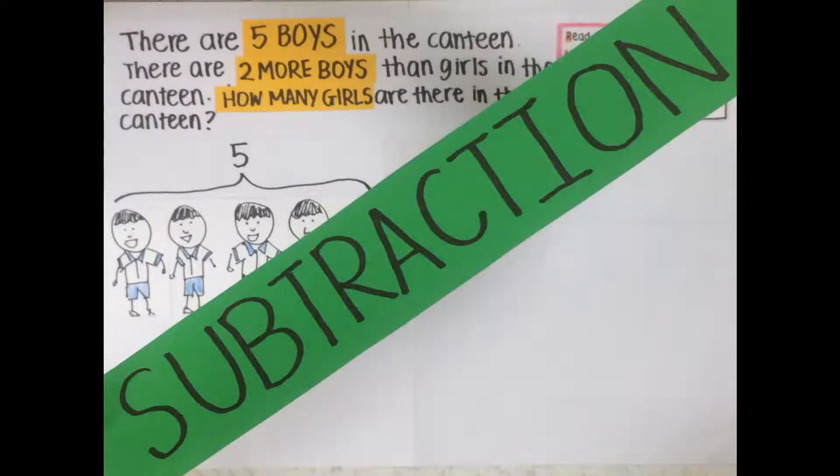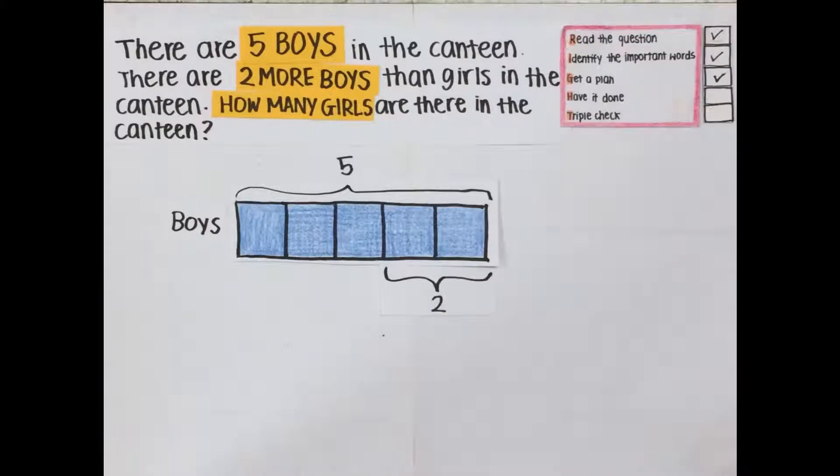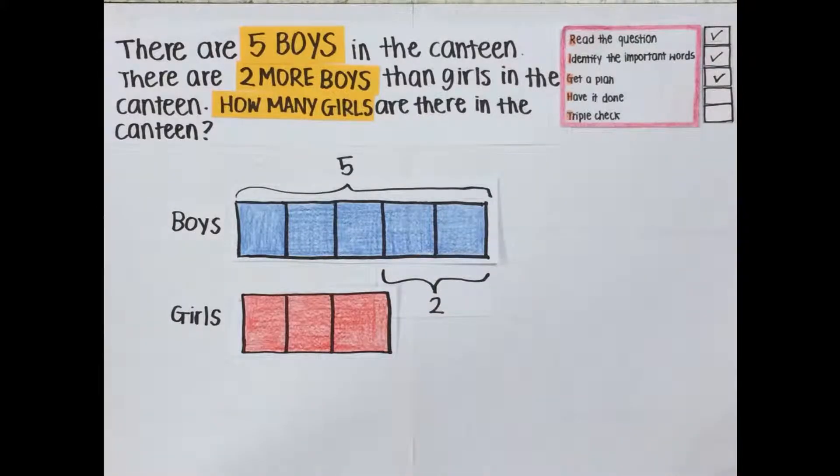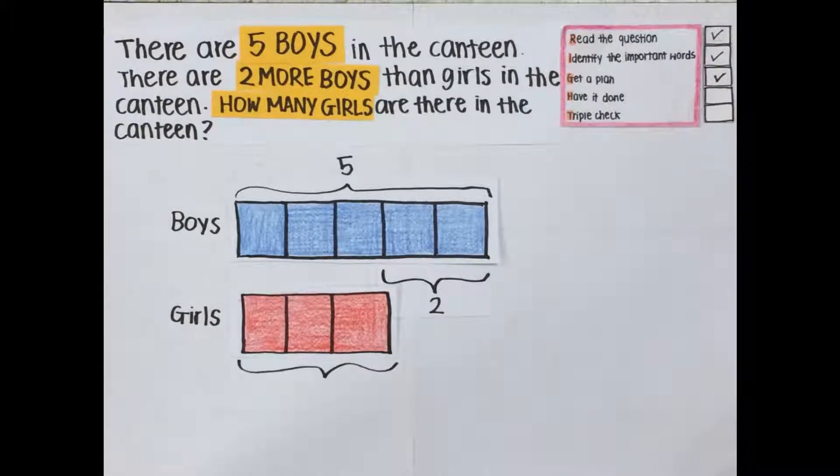We then translate this into a model form. Since there are 2 more boys than girls, therefore there are 5 minus 2 equals to 3 girls.